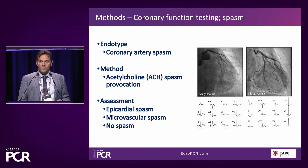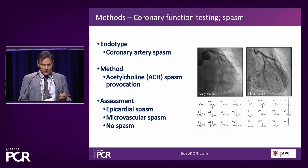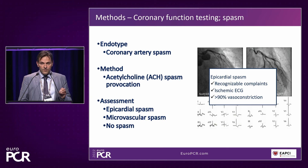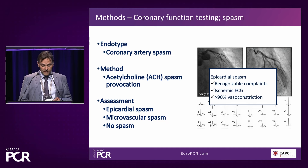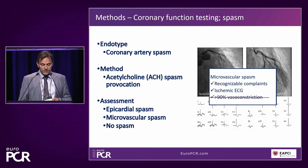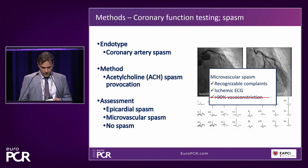In Nijmegen, we always start with the acetylcholine spasm provocation test. For that test to be called positive, it has to fulfill all criteria: the patient needs to have recognizable complaints, ischemic changes on the ECG, and if there is more than 90% angiographic vasoconstriction, we call that epicardial spasm. If only the first two criteria are met — recognizable complaints together with ischemic ECG changes — we refer to that as microvascular spasm, as adopted by the COVADIS working group.